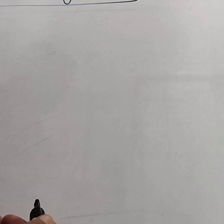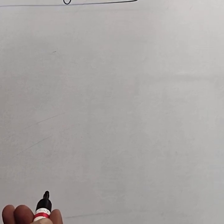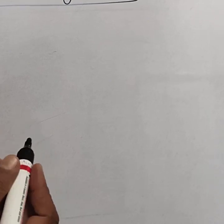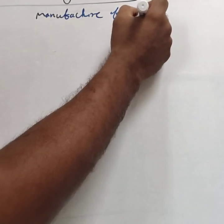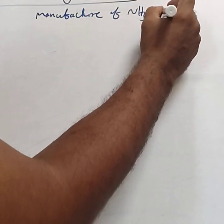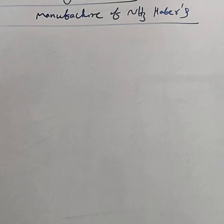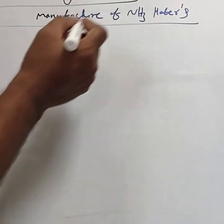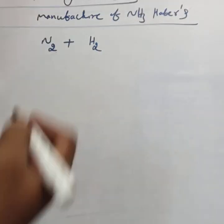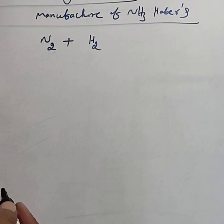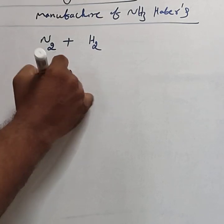One is preparation of ammonia by Haber process, preparation of nitric acid by Ostwald's process, and third is sulfuric acid by contact process. Among these three, they can ask one question and each question carries three marks. Now consider the first one: manufacture of ammonia. In the Haber process, ammonia is prepared by direct combination of nitrogen and hydrogen in the ratio 1:3.